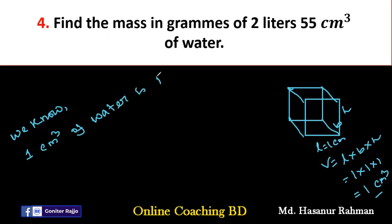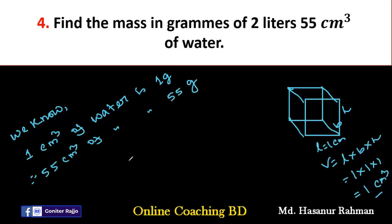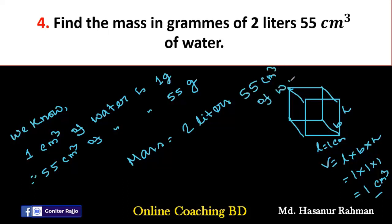So, 55 centimeter cube of water will be 55 multiplied by one gram, which equals 55 grams. Now, we have to find the total mass — mass equals two liters 55 centimeter cube of water.